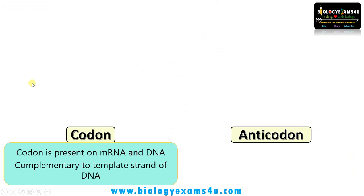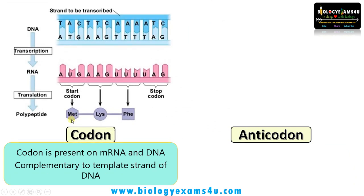The second difference is that a codon is present on mRNA and DNA. As you can see in the central dogma, DNA is transcribed to RNA and translated to protein. This is the mRNA, and AUG — as we know — codes for methionine, the first amino acid, or the start codon. AUG on mRNA is complementary to the template strand of DNA. The codon on the DNA template strand is TAC, where T pairs with A, A pairs with U, and C pairs with G. The codon on mRNA is complementary to the template strand of DNA.